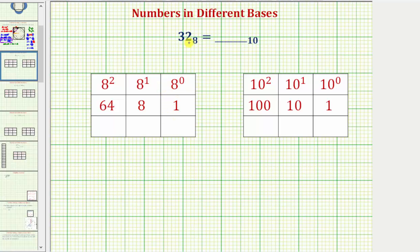So starting with the rightmost digit and working left, the first place value is the eight to the zero or ones place value. Next is the eight to the first or eighths place value. Then we have the eight squared or 64's place value and so on.